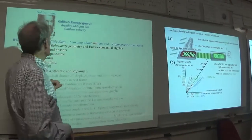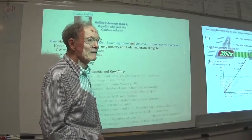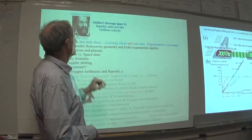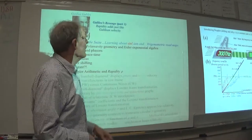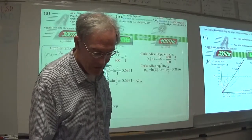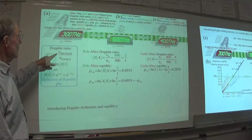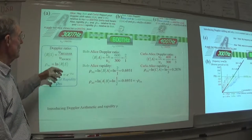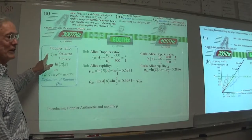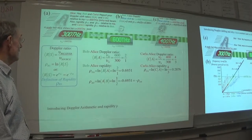To make Galileo happy - it took me a long time to find a picture of Galileo where he wasn't frowning. His revenge is that rapidity obeys his law: you just add rapidity to get the answer. What's rapidity? The Doppler ratio - receiver over source. That's the way to find it. There's the thing that starts it, there's the thing that reads it. And the logarithm of that ratio I'll call rho.